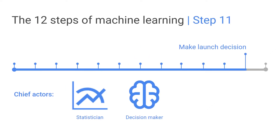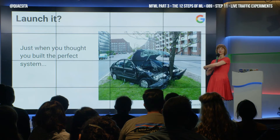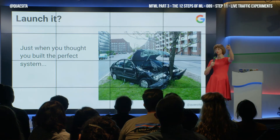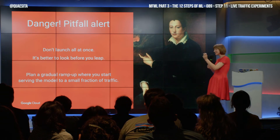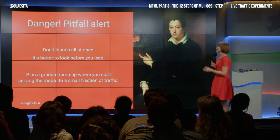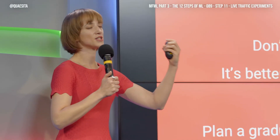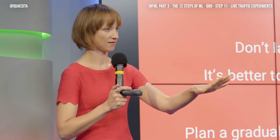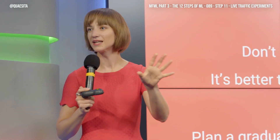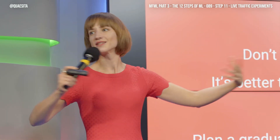Now you make your launch decision in step 11. Just when you think this thing is perfect with all its bells and whistles and safety nets, you release it upon your users. Please don't launch it all at once. Little gradual releases is a good idea — do a gradual ramp up. Serve 1% of your traffic first. Are we okay? Because if there's a big bug in there, you don't want to discover that with all of your traffic served.